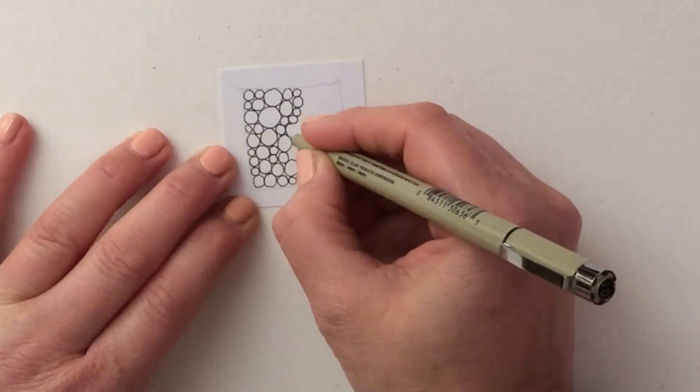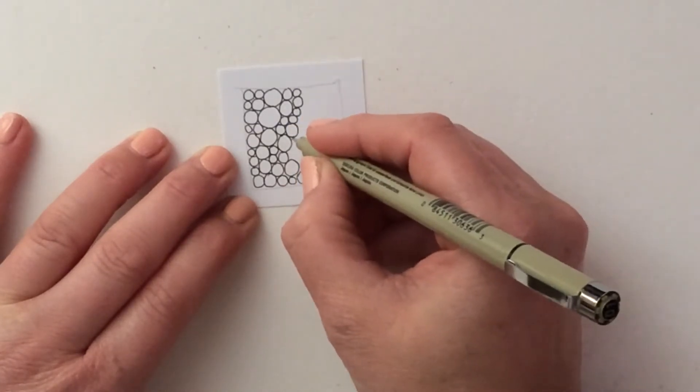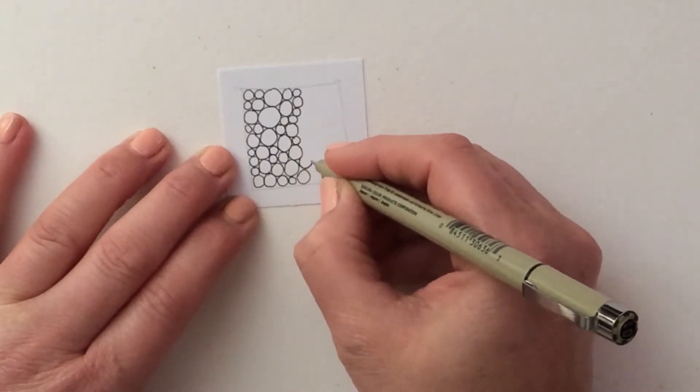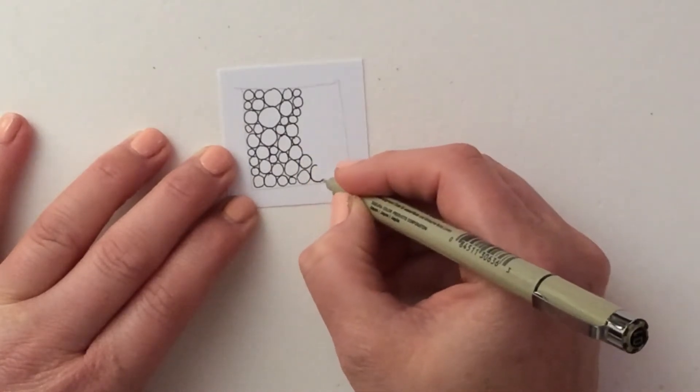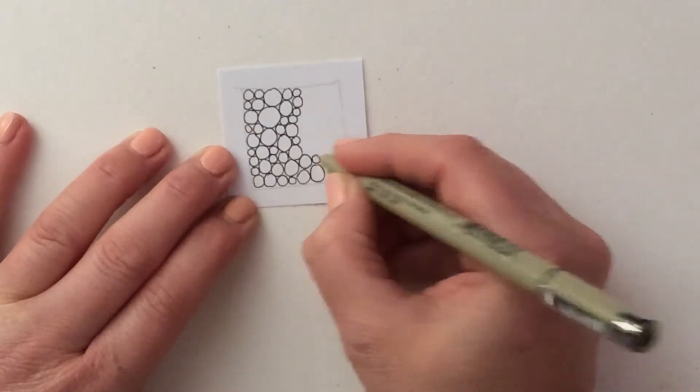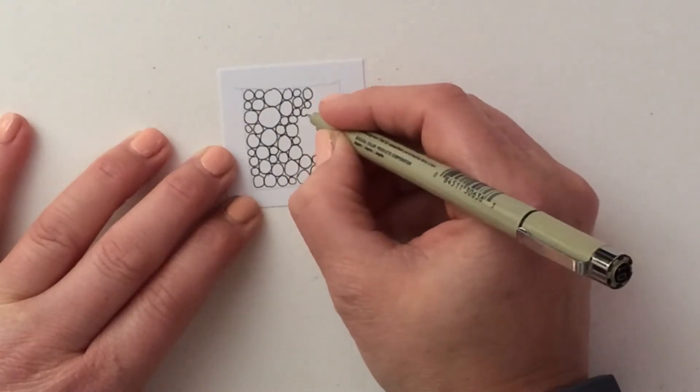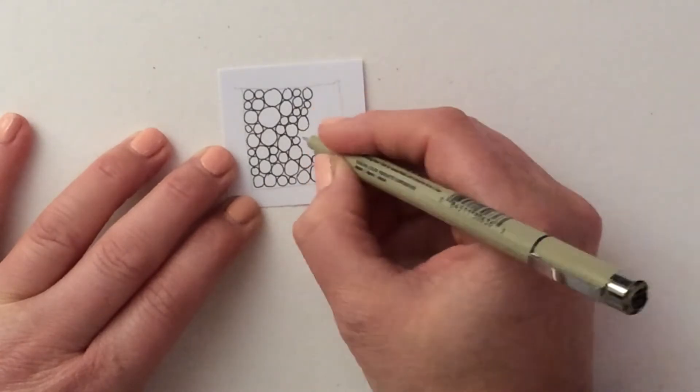And I know that sounds rather odd, but when drawing repetitive circles they can sometimes morph into ovals without you realizing.